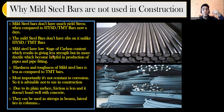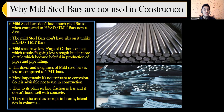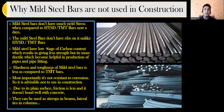The more the carbon content, the less the ductility. Remember, we originally used rebars because they were ductile. But as the grade increases, ductility decreases. Mild steel has very low carbon content, so its ductility is high — that's why it's used in pipes and pipe fittings. Hardness and toughness of mild steel are also less compared to TMT bars; more grade means more toughness and more strength.